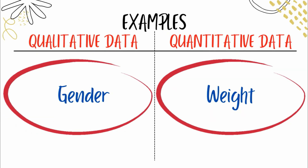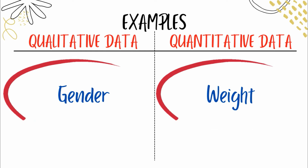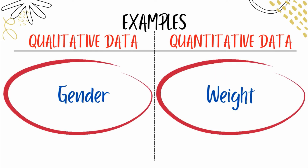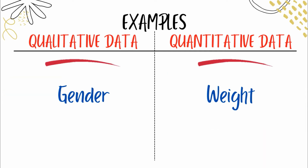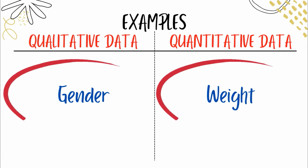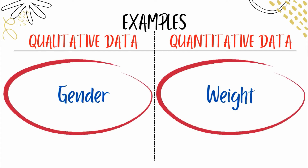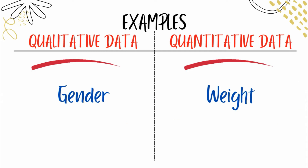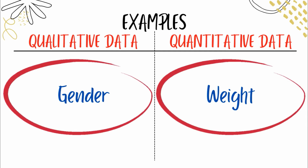Another example of qualitative data is gender. Gender may be male, female, or transgender — that's qualitative data. For quantitative data, we have weight. When we speak of weight, we don't say 'extra extra large.' You may weigh 72 kilograms, 65 kilograms, 60 kilograms, and so on.